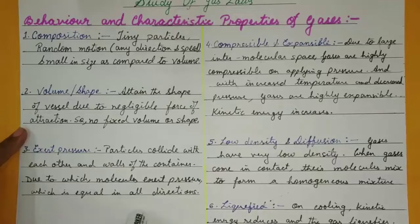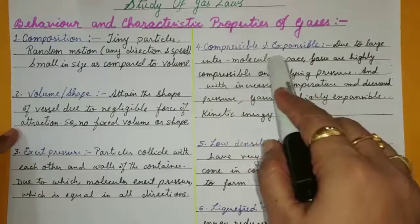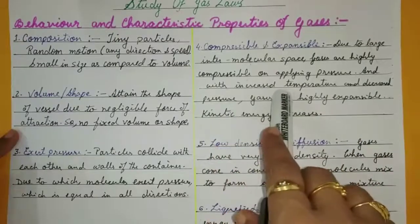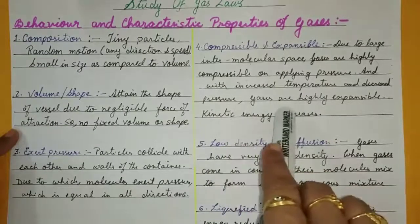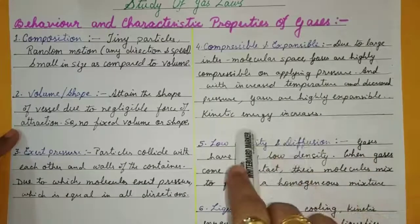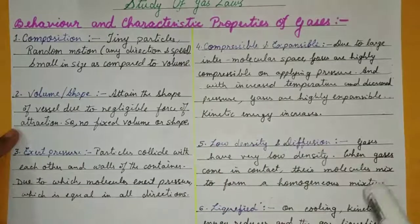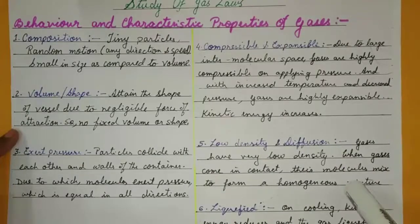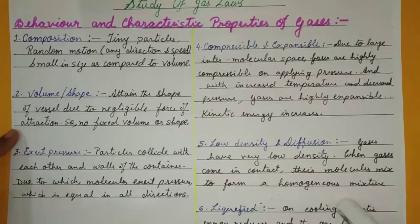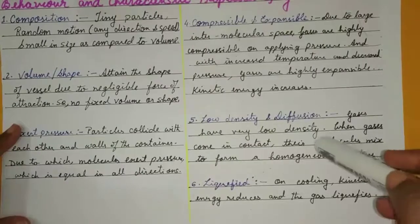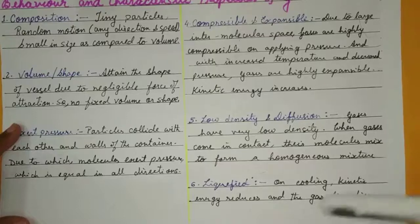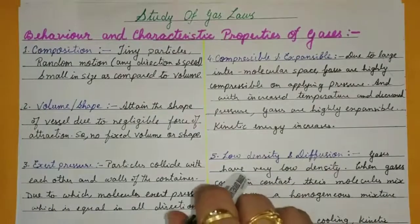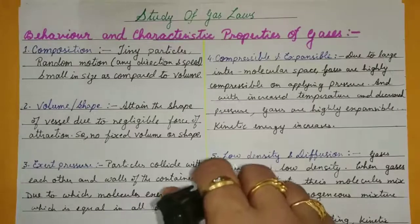Due to large intermolecular space, gases are highly compressible on applying pressure. With increased temperature and decreased pressure, gases are highly expansible. Kinetic energy depends on temperature. Gases have very low density. When gases come in contact, their molecules mix to form a homogeneous mixture — this is diffusion. On cooling, kinetic energy reduces and the gas liquefies.